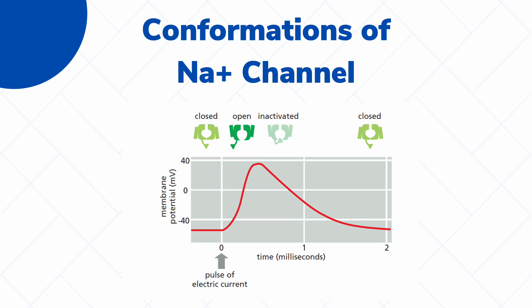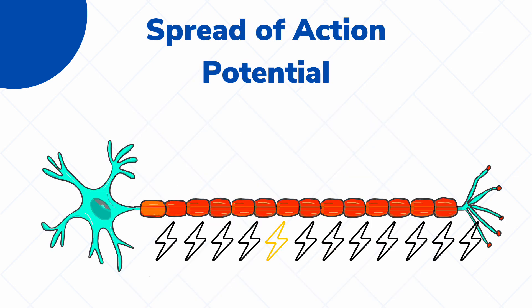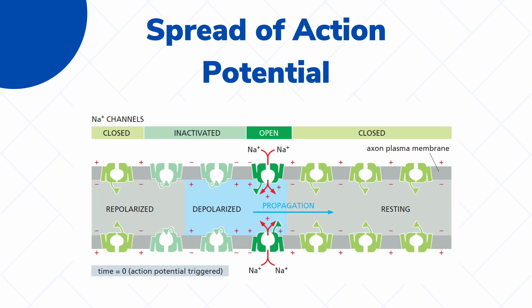Something important to understand is that the action potential actually spreads across the axon — it does not appear all at once in all places of the neuron. Instead, it travels from one end to the other, slowly moving its way across the axon until it reaches the terminal end. The reason it spreads gradually is because the entirety of the axon is covered by sodium channels, and depolarization only occurs in one region at a time.